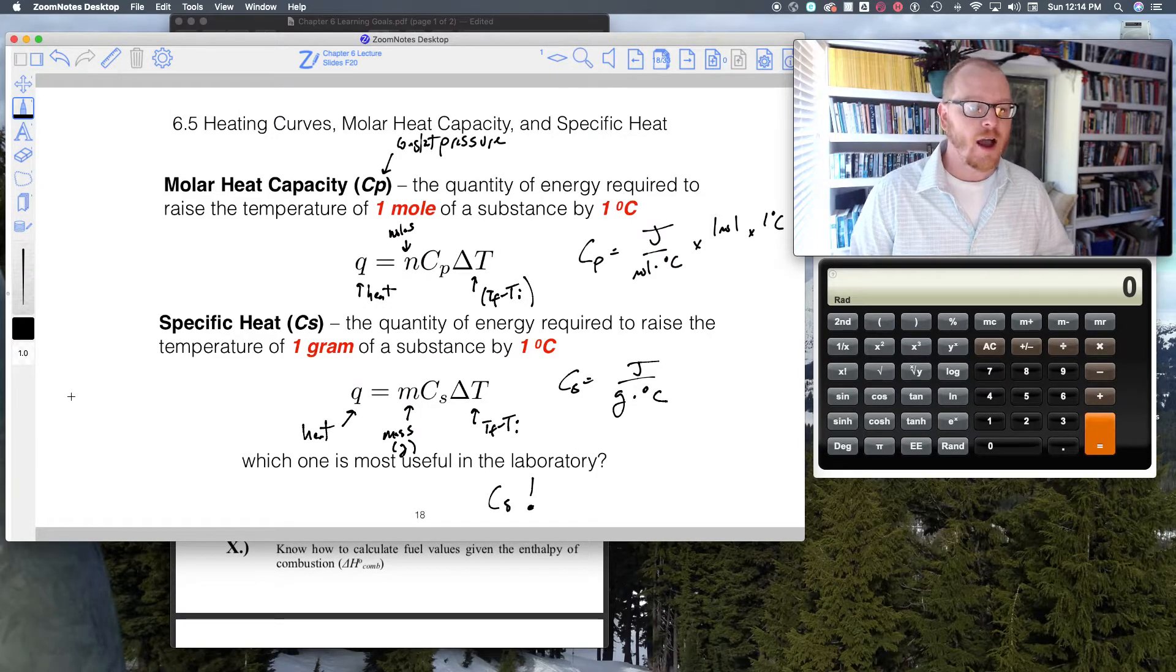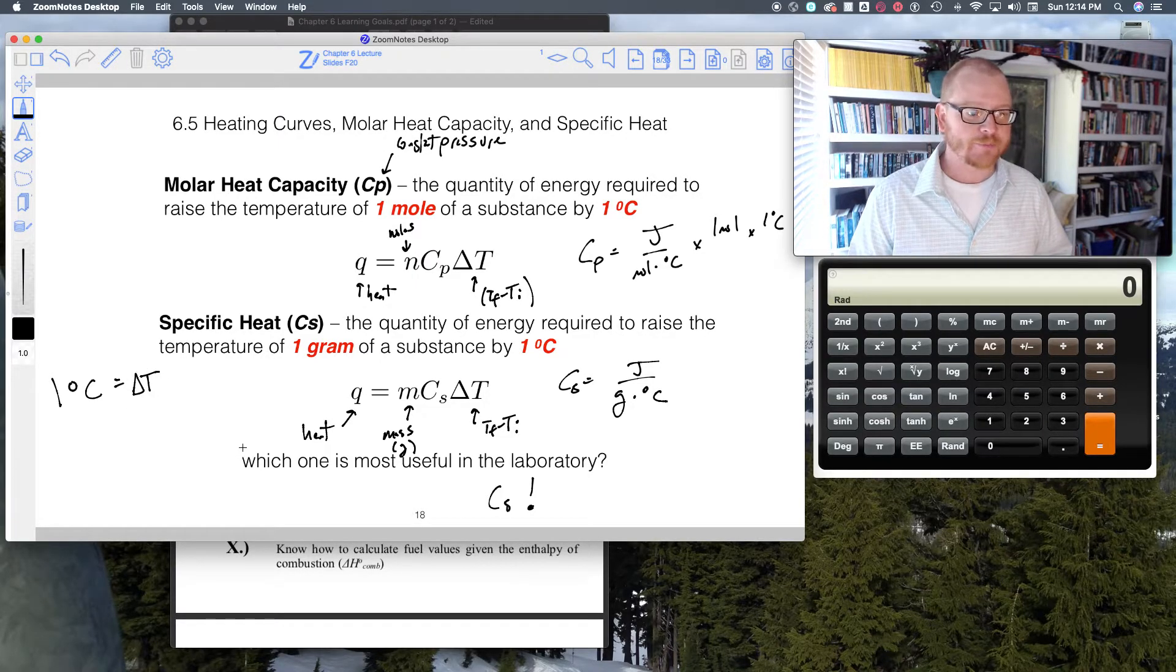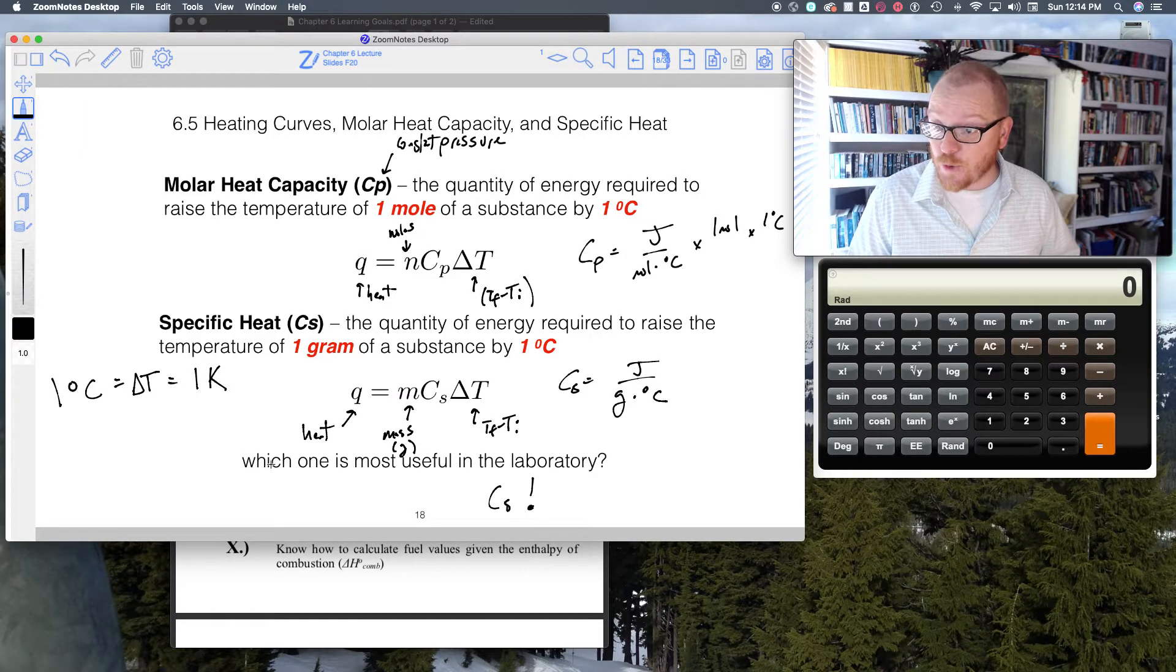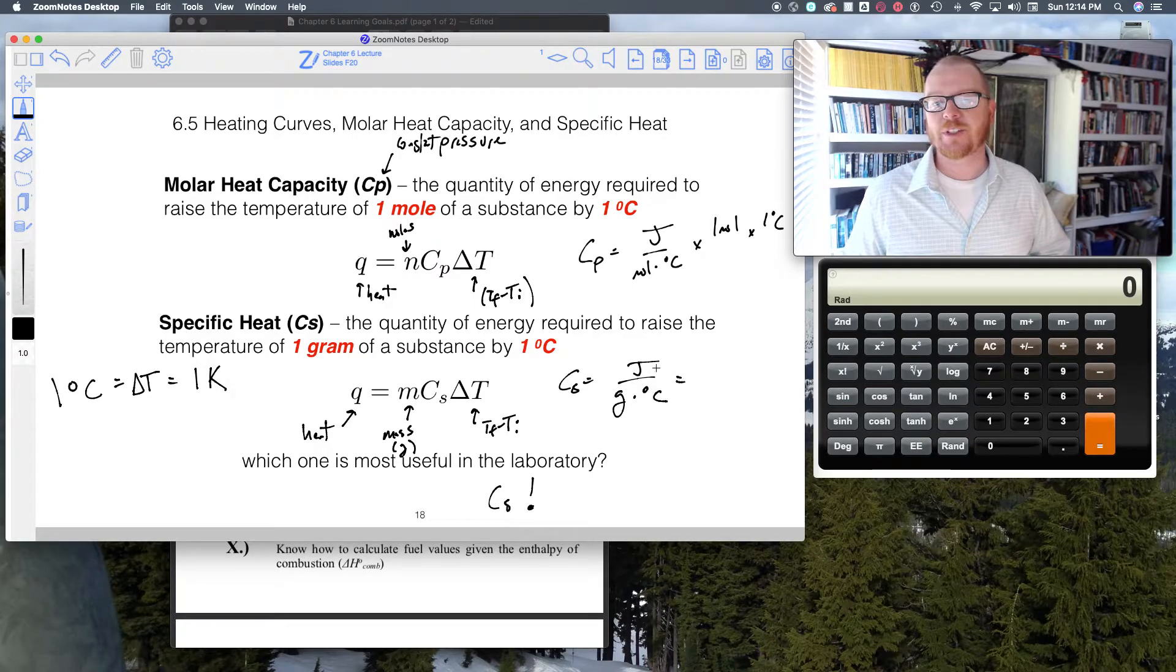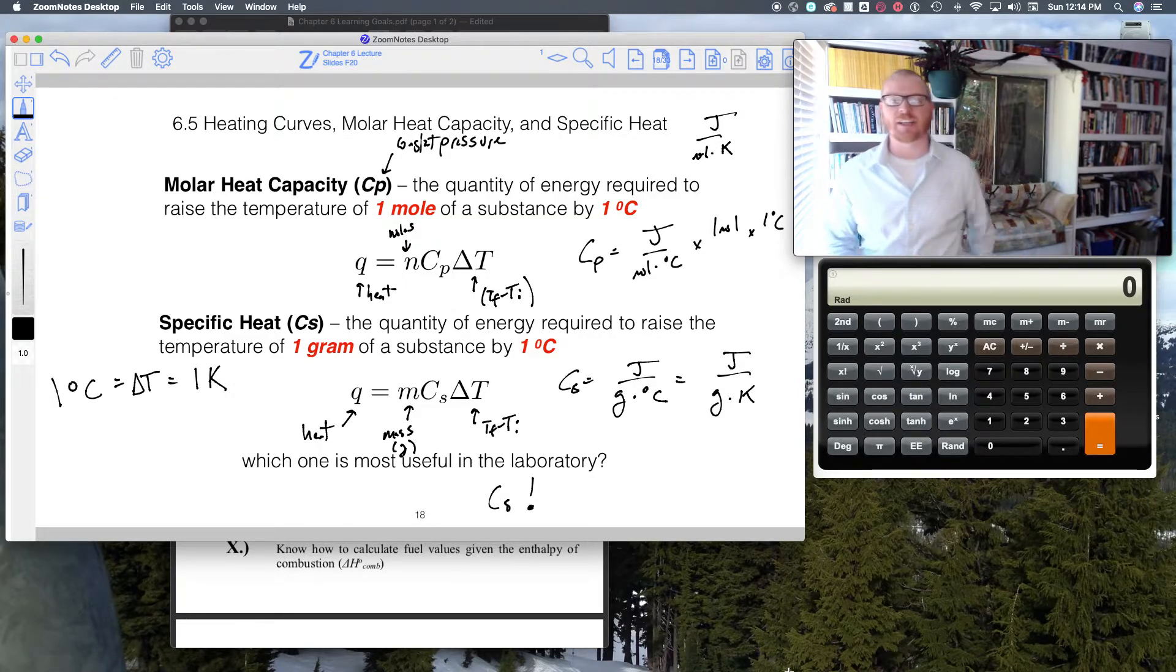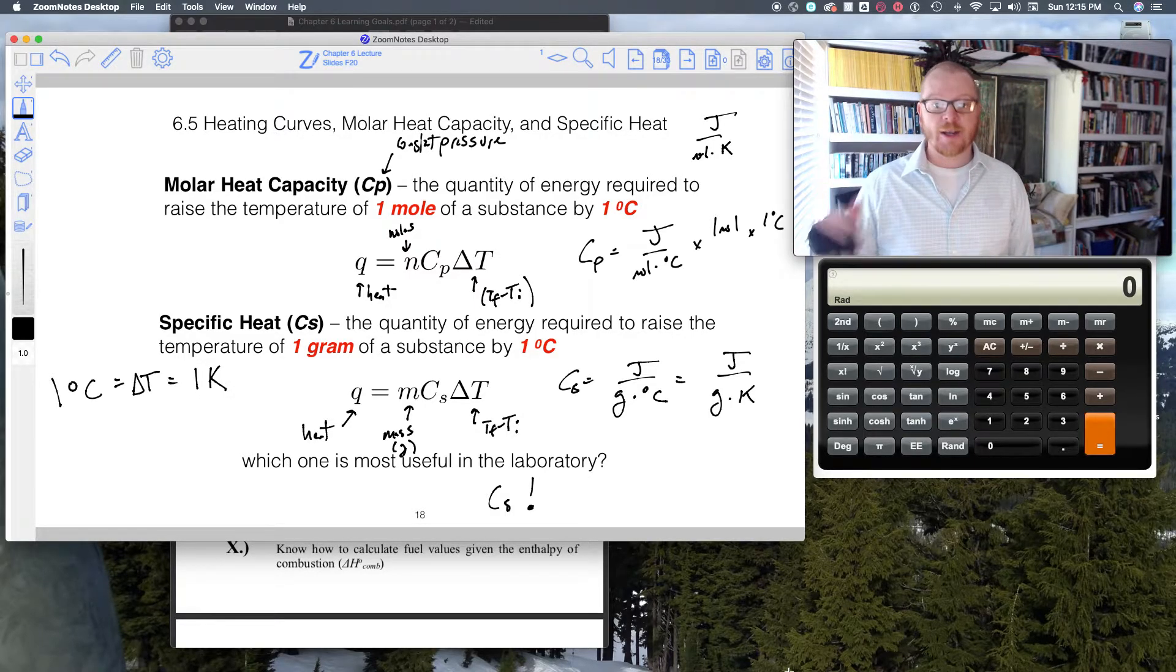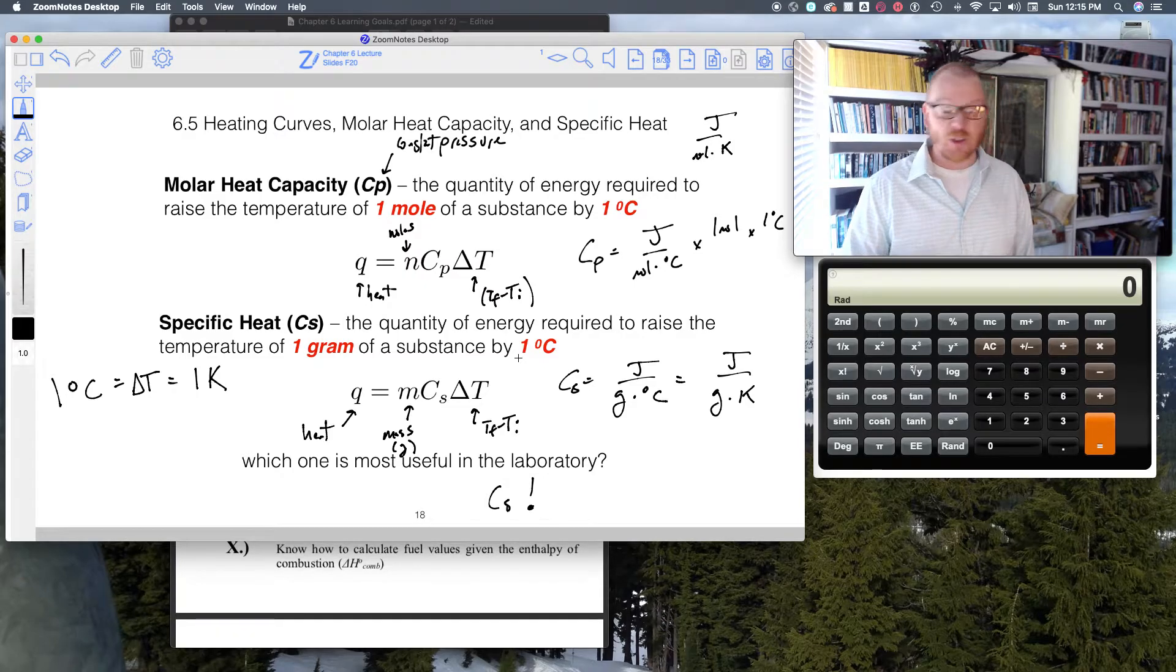I also want to point out, because the unit of—if you do one degree Celsius, if that equals delta T (let's just say, for example), then that's going to be the same as one Kelvin. The value of one degree Celsius is the same as one degree Kelvin in terms of delta, in terms of the change. So these units can also be given as joule per gram per Kelvin or joule per mole per Kelvin. It works the same. You can actually keep temperature in Celsius or Kelvin for this particular equation, and the reason for that is because you're dealing with the delta, the change in temperature. That's why it works out that way.